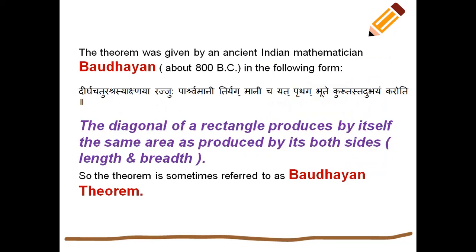The ancient Indian mathematician Baudhayana, about 800 BC, also stated this — of course it is given in Sanskrit, you can read: the diagonal of a rectangle produces by itself the same area as produced by its both sides, length and breadth. That is what the theorem states.